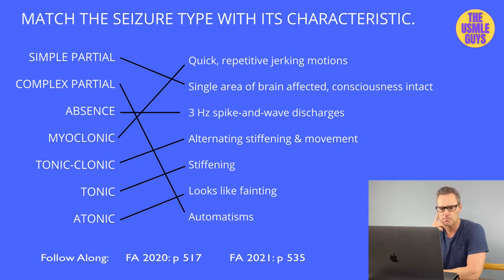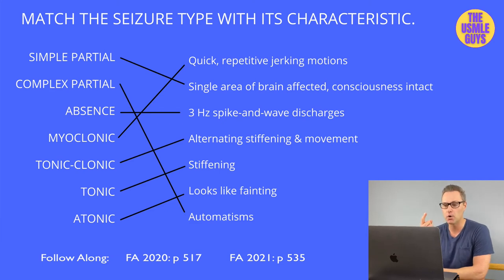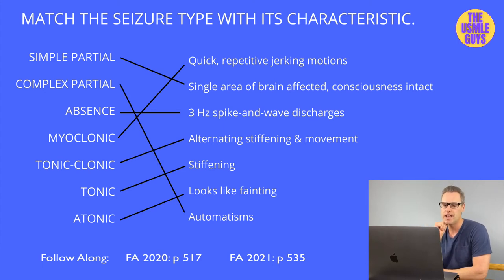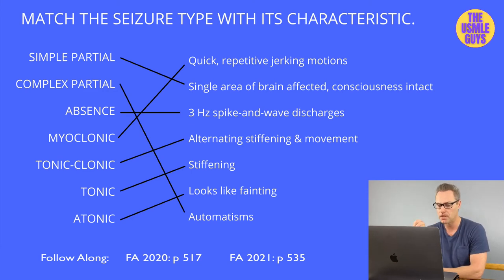There are two main classes of seizures: partial focal seizures and generalized seizures. Partial focal seizures affect one area of the brain and most commonly originate from the temporal lobe. The simple partial seizure is characterized by motor, sensory, autonomic, and psychic consequences while the patient maintains consciousness. The complex partial seizure leads to automatisms and impaired consciousness.